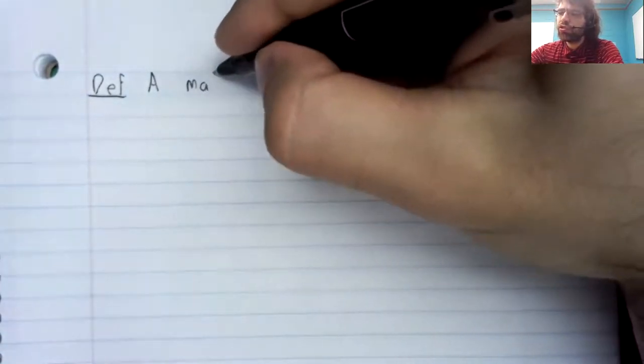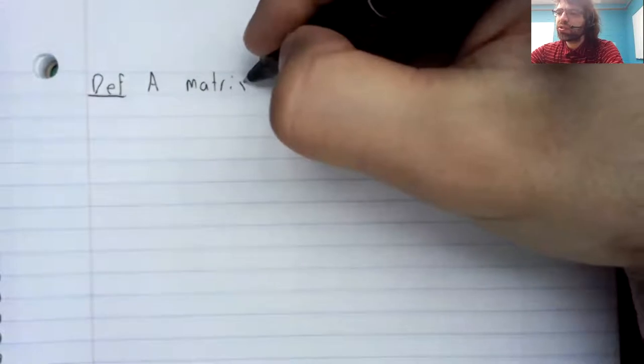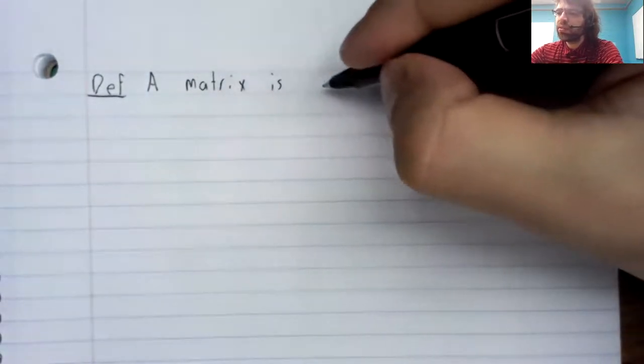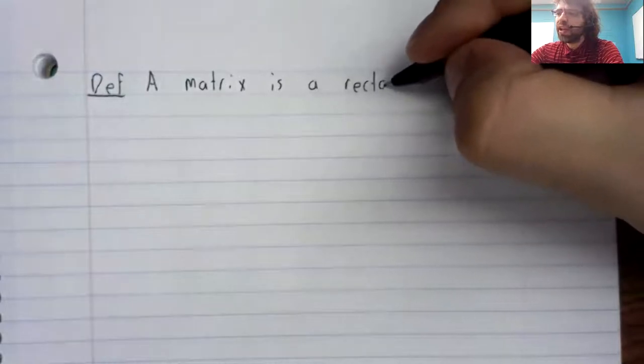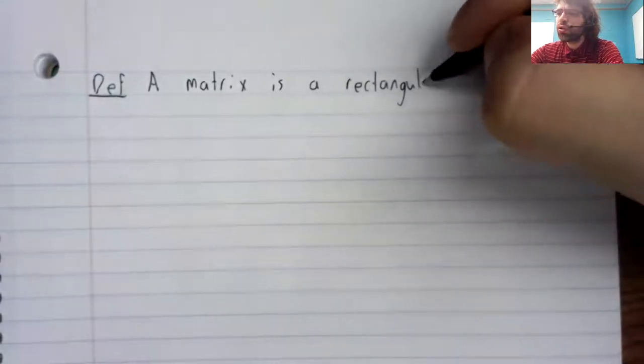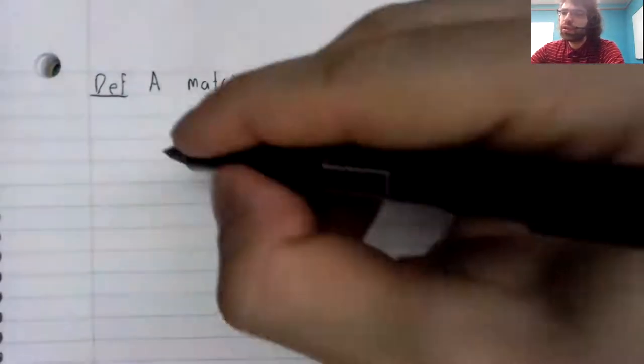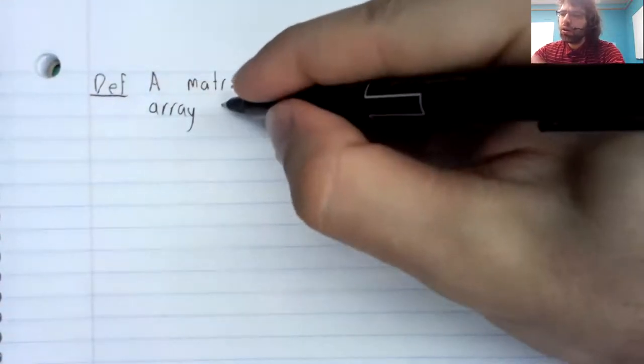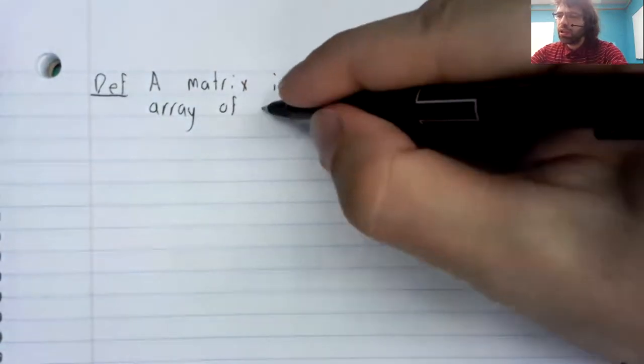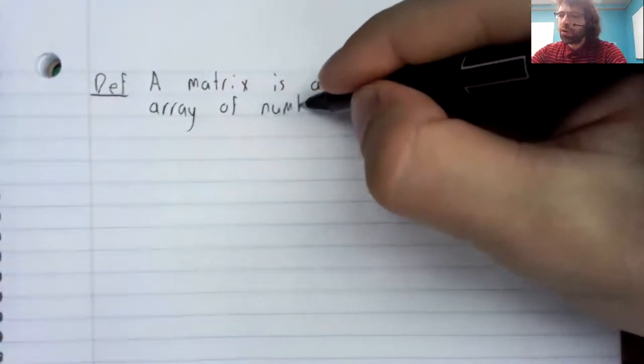Definition: A matrix is a rectangular array of numbers.